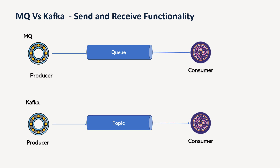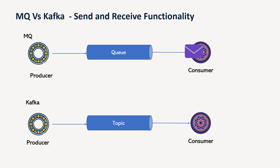If you look at either MQ or Kafka, both have a producer and a consumer. The producer is an application that produces the message and puts it into the queue or topic. Queue is utilized for MQ and topic is used in Apache Kafka. Whenever a producer produces a message, it's sent to the queue, and from the queue the consumer can read the message and process it. In Apache Kafka, the way is almost similar — the producer produces a message and the consumer consumes the message from the topic.